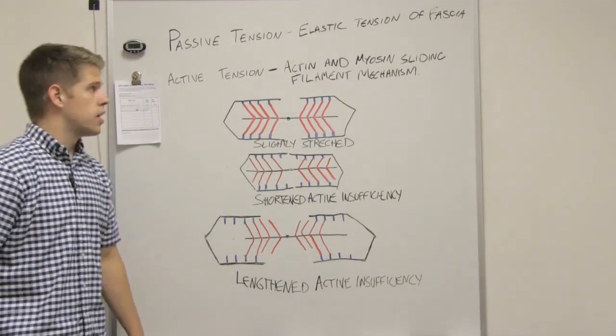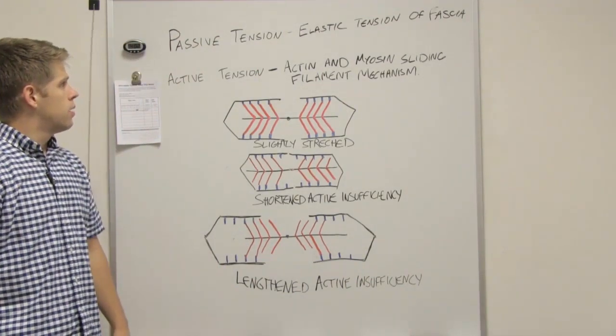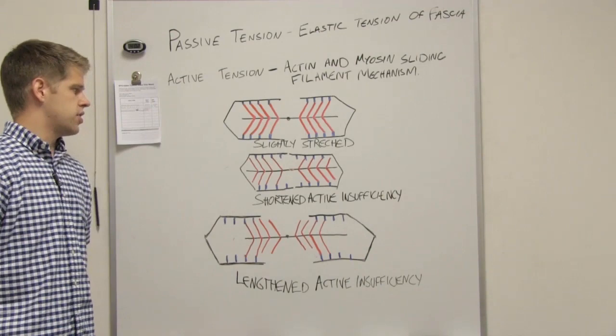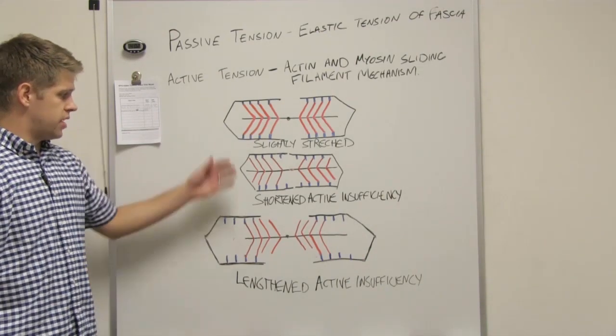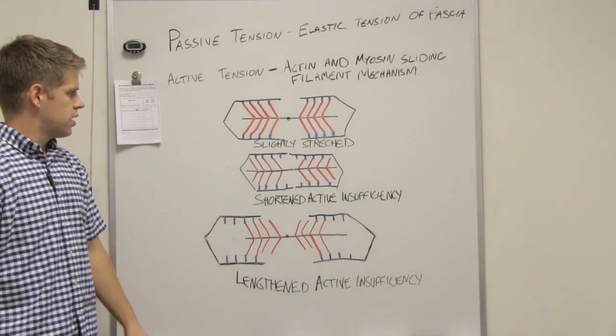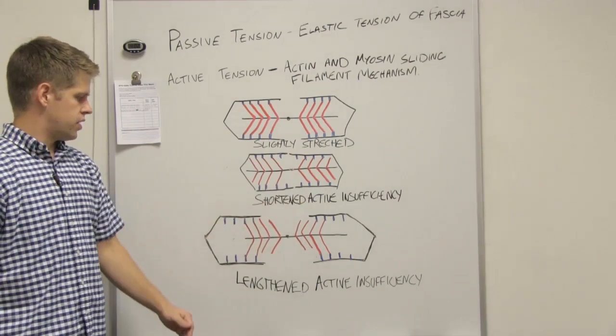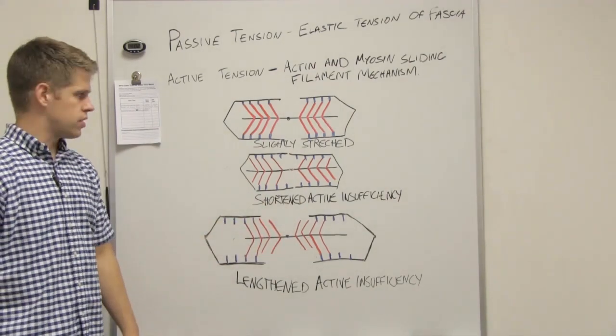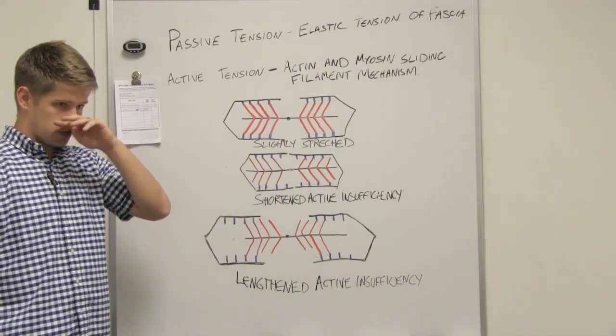Okay, so today we're going to talk about a few things: passive tension, active tension, then we're going to talk about the different types of shortened active insufficiency and lengthened active insufficiency, and also the slightly stretched position.